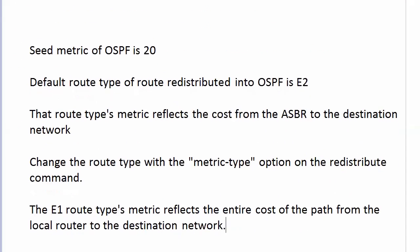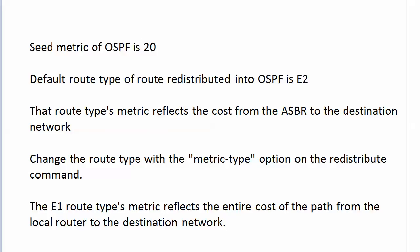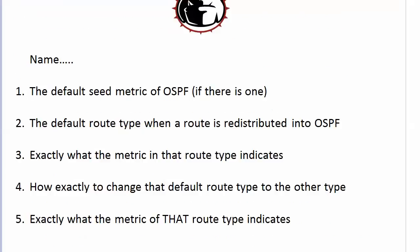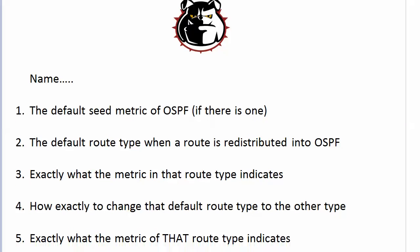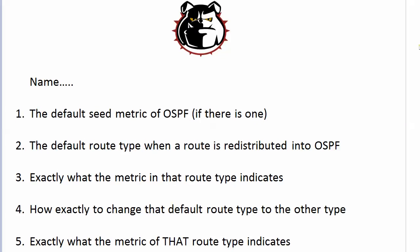Let's go over those answers one more time. The seed metric of OSPF is 20. The default route type of a route redistributed into OSPF is E2. That route type's metric reflects the cost from the ASBR — Router 2, the router doing the redistribution — to the destination network. We changed that route type using the metric-type option on the redistribute command. And finally, the E1 route type's metric reflects the entire cost of the path from the local router to the destination network. Check our other videos on YouTube. I'm Chris Bryant — thanks for making us part of your CCNP success story.